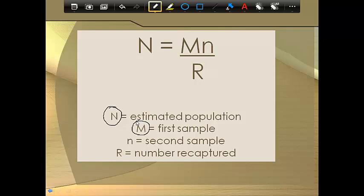You come back later, and you collect a second sample. That's our lowercase n. And from that second sample, some may be organisms that you've already tagged. That's our R. The big R is the number of organisms you recapture from that second sample that already have tags on them.